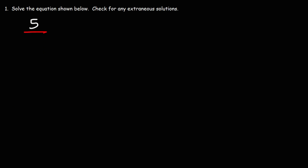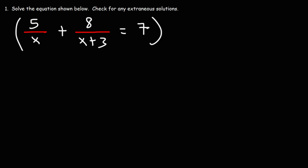For the sake of practice, let's try another example. Say we have the equation 5 over x plus 8 over (x plus 3) equals 7. Go ahead and solve this equation and check for any extraneous solutions. The first thing I recommend doing is getting rid of the two fractions. To do that we need to multiply every term by the denominators of these two fractions — in this case x and x plus 3.